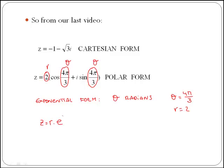Replacing r, which is 2, and theta, which is 4 pi over 3, we get that the exponential form of this number here is z is equal to 2 by e to the power of 4 pi over 3 i.